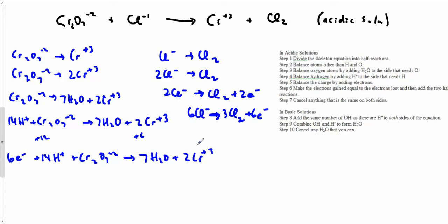And now I have to add them. So what do I have? I'm going to put an arrow right here, right in the middle. So I've got 6 Cl minus, I've got 6 electrons, I've got 14... I didn't like the way I wrote any of that, so I'm going to rewrite it.